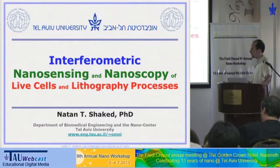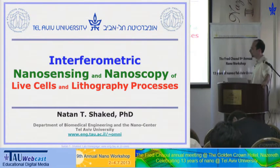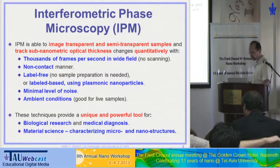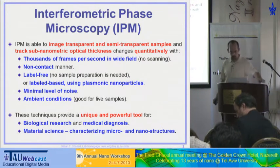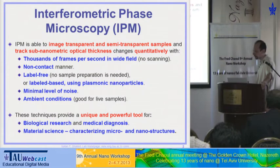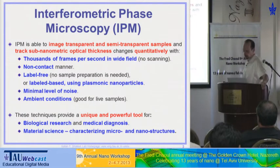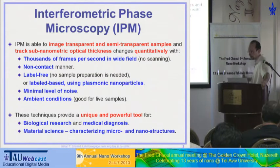There is no need for very expensive setups. And again, because we are doing that more efficiently, we can get these nanosensing and nanoscopy capabilities. First, I'm going to talk about the technique advantages. We call it IPM — Interferometric Phase Microscopy. It is able to image transparent and semi-transparent samples and track sub-nanometric optical thickness sensitivities in time or in space.